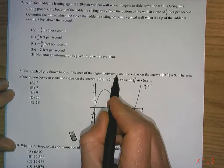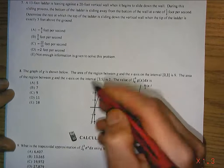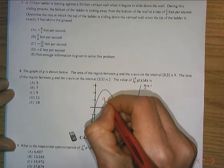The area of the region between G and the x-axis on the interval 0 to 3 is 9, so this area is 9 units.